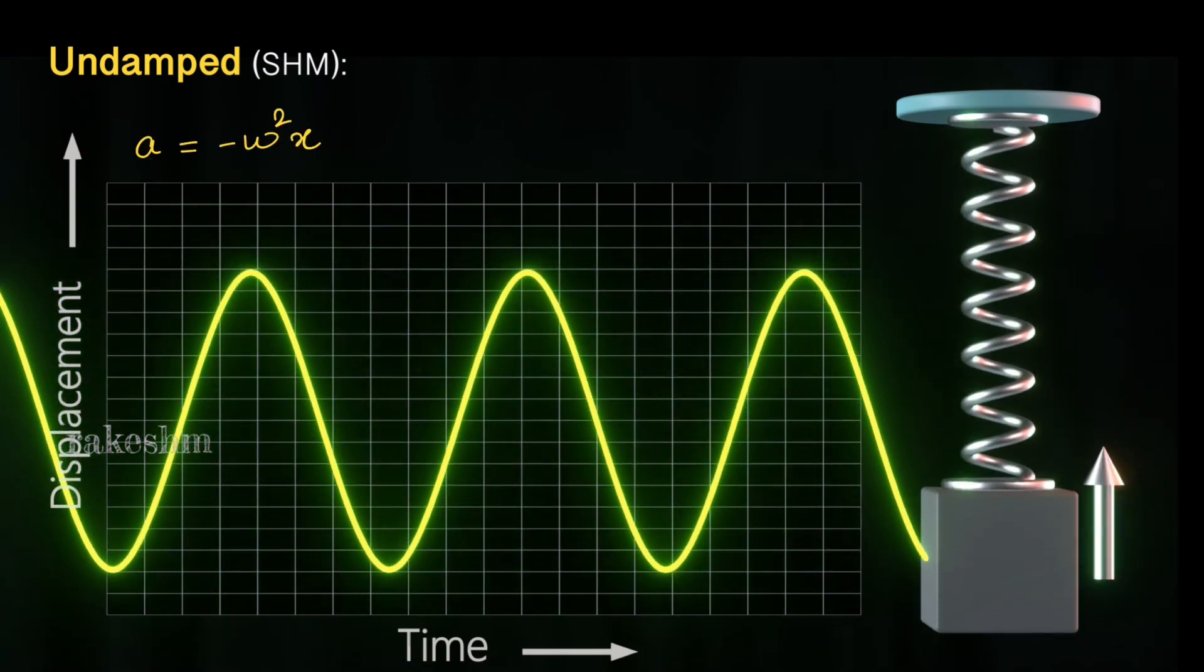The acceleration of this block equals minus omega square x, where x is the displacement from mean position. Solving this, we get the equation of SHM which is x equals A sine omega t plus phi.